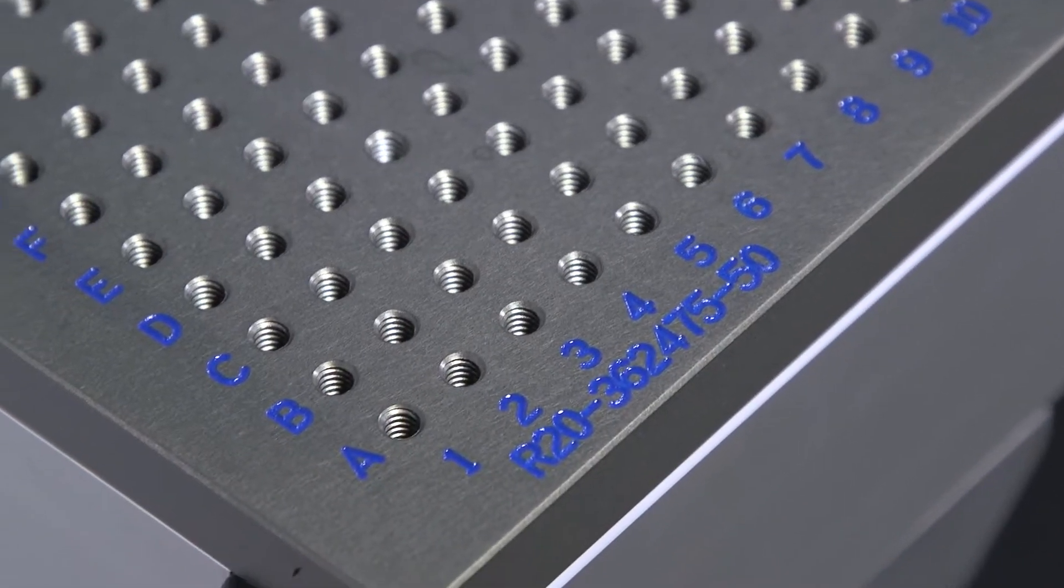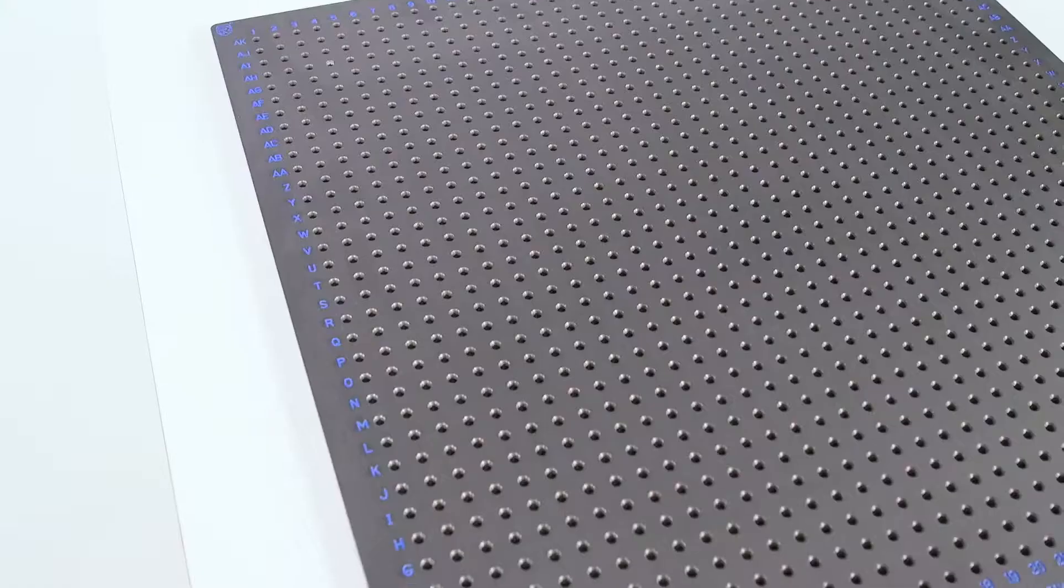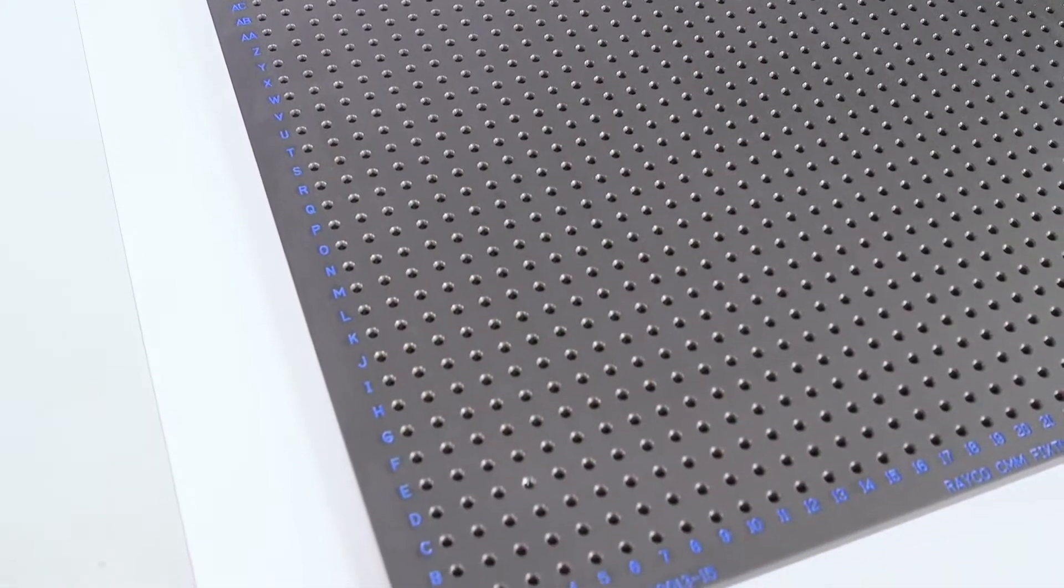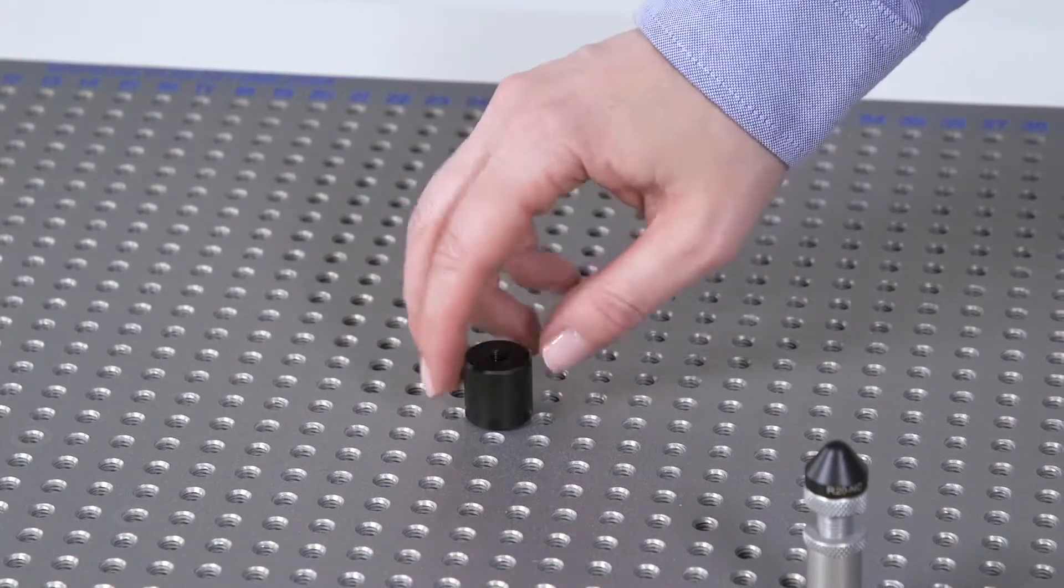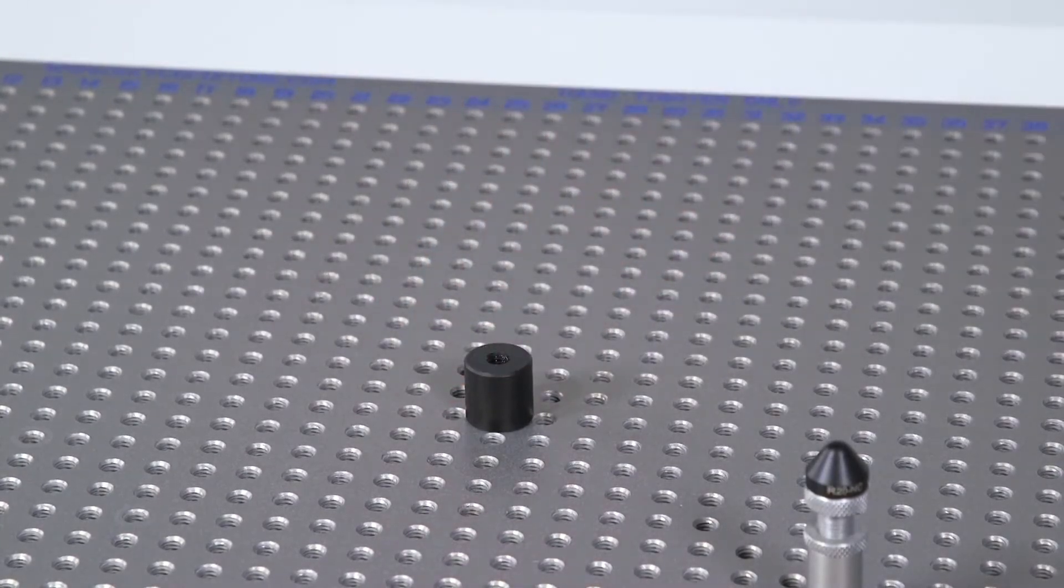Rayco CMM plates feature alphanumeric engraving located along the outer perimeter, allowing the machine operator to easily identify and document hole locations to ensure quick and easy setups.